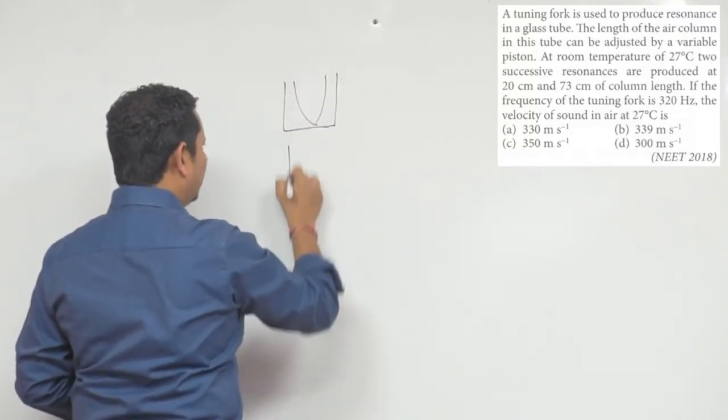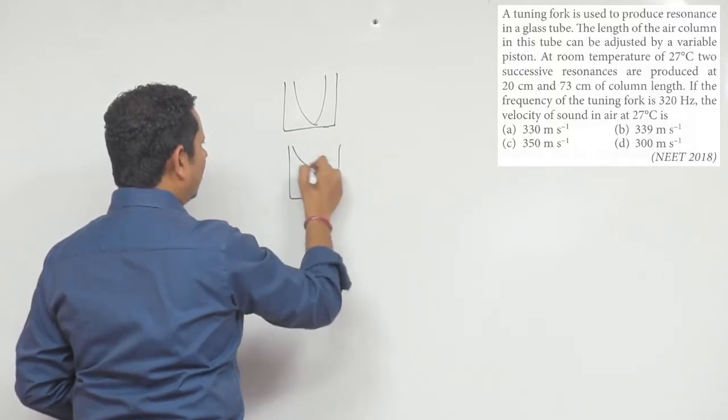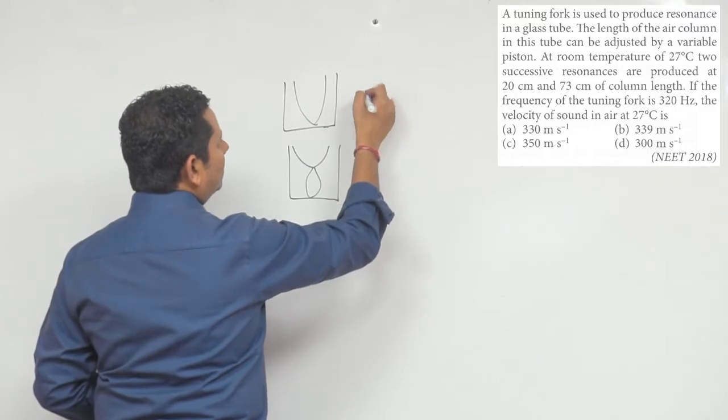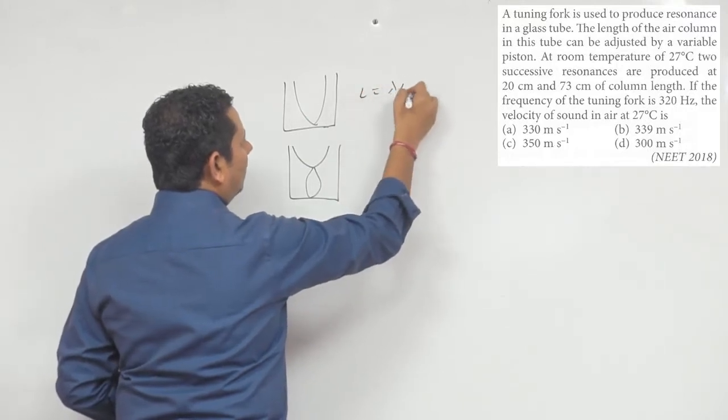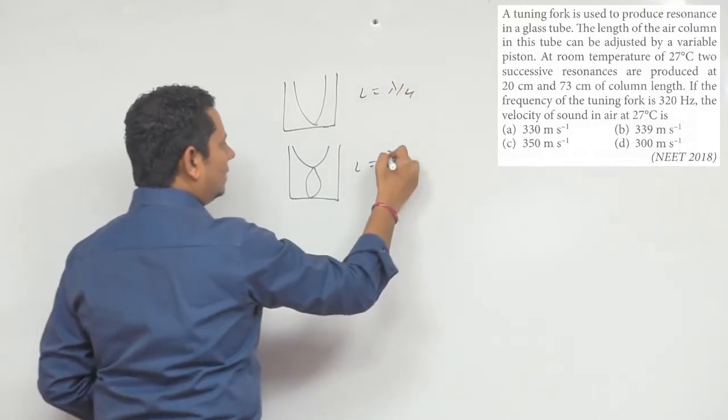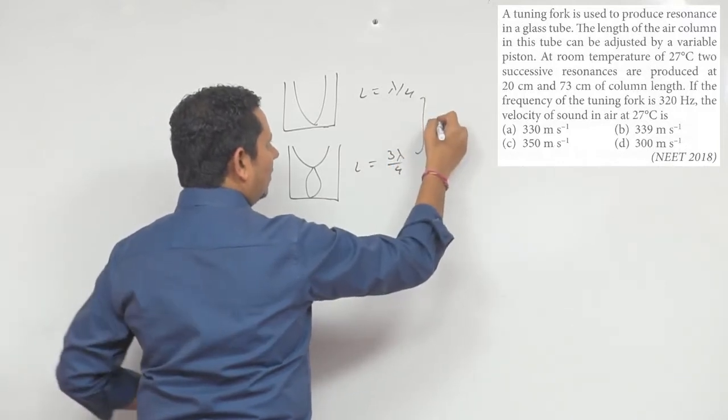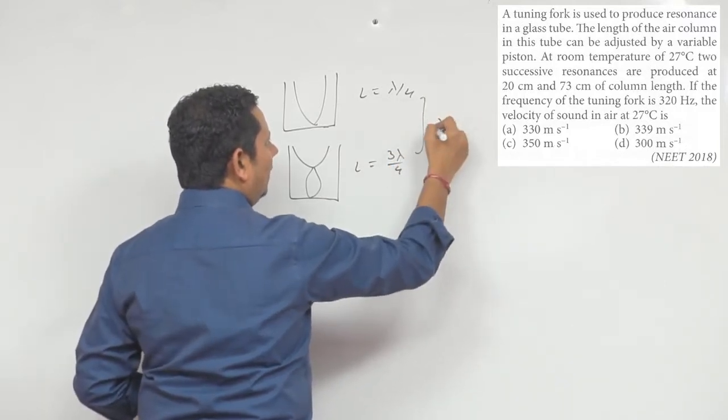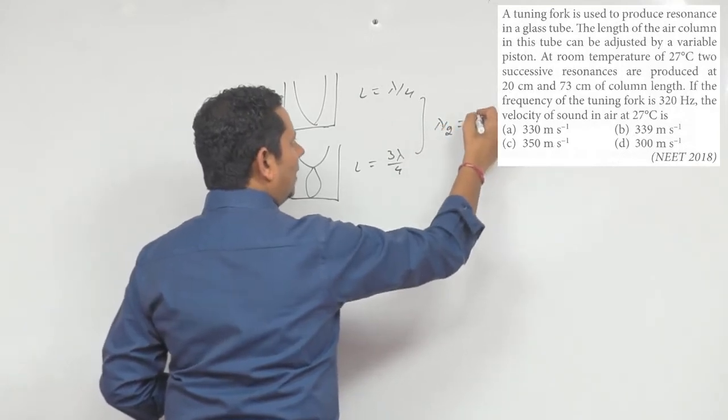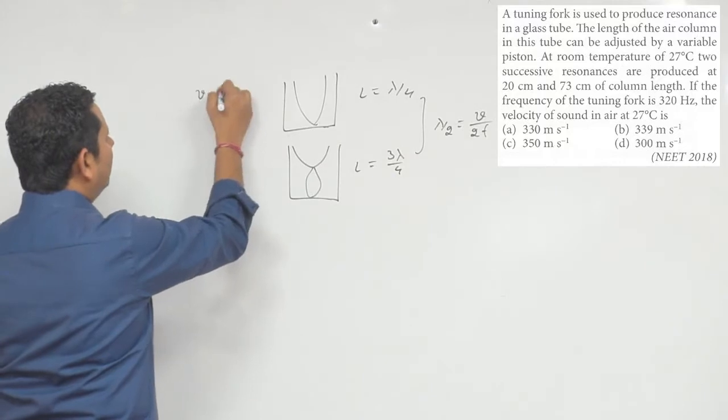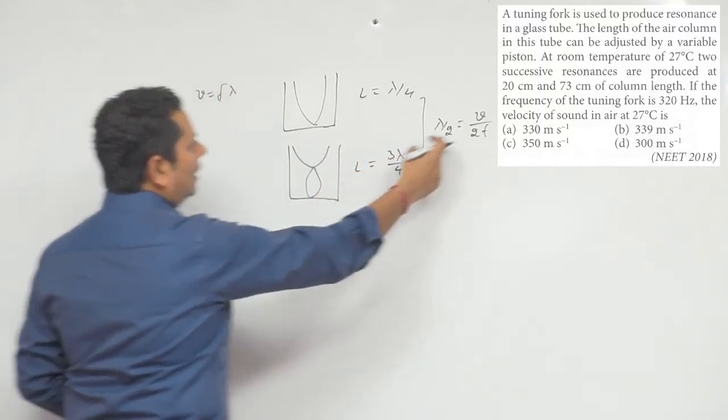...organ pipe, or your basic fundamental. L is equal to lambda by 4. The length is equal to 3 lambda by 4, and the difference is lambda by 2. The difference of lambda by 2 is equal to v over 2f, because we know that v equals f lambda. So lambda we have replaced, lambda by 2 we have replaced by v over 2f.